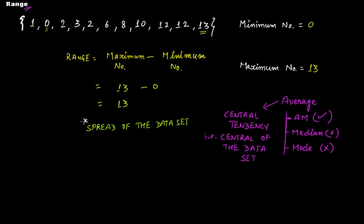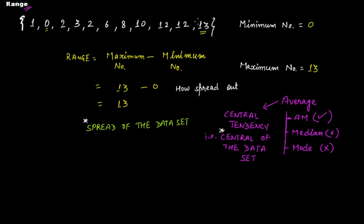These two are actually two key features of any given data set: the center of the data set and the spread of the data set. While you calculate the center using arithmetic mean, median, or mode, you calculate the spread using range. Spread tells you how spread out your data set is. In the first example the range was 13, and in the second it was 25, meaning the second data set is more spread out.